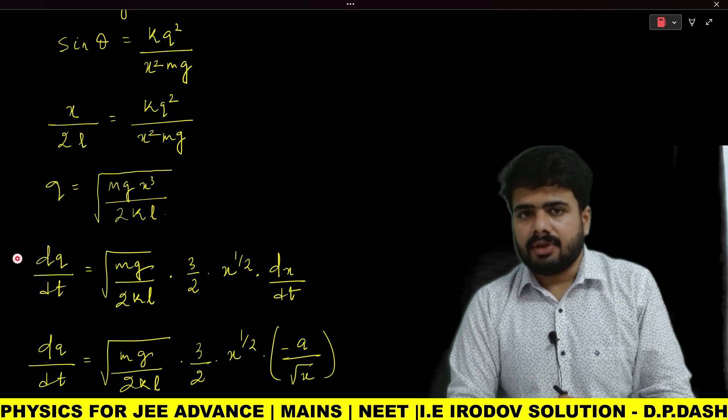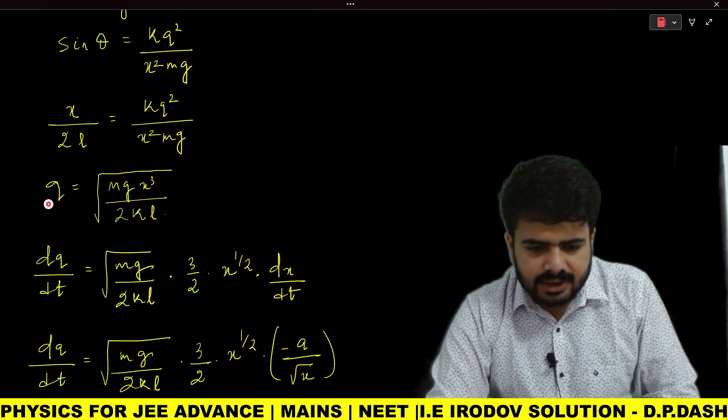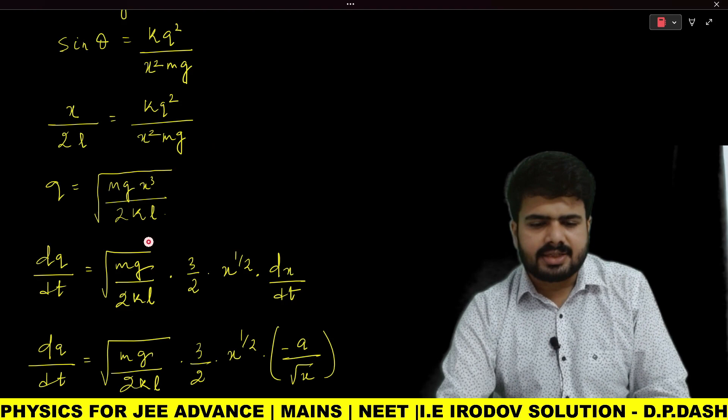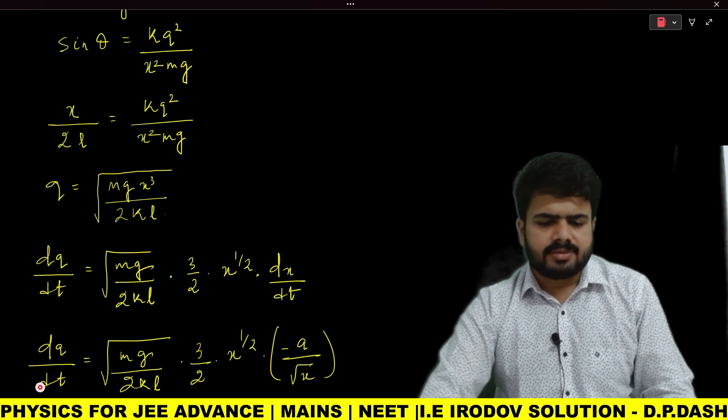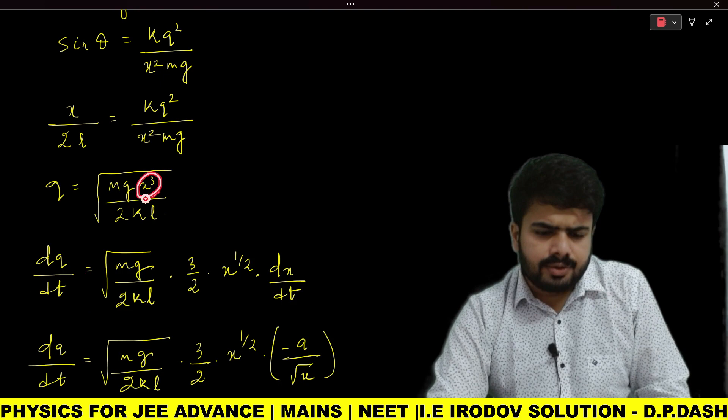Your aim is to find dq/dt. For that, you need charge q. Here I have made the charge as my subject and kept everything else on the right side. Now we need to differentiate with respect to time to get dq/dt.